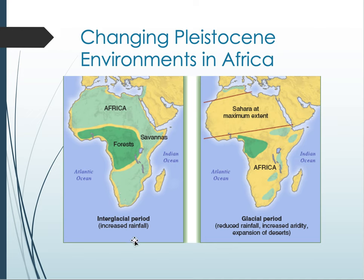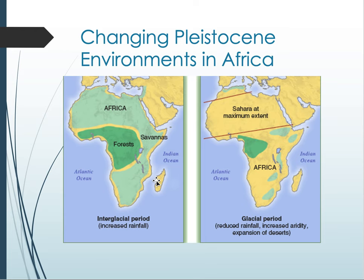The cause of these wet and dry cycles is interglacial and glacial periods occurring during the Pleistocene. During an interglacial period, when there's less ice captured in arctic environments, we have a lush, wet African terrain. But during a glacial period, when more water is locked up in glaciers, we have a dry, desert-like environment. Around 2.5 million years ago, Africa starts to fluctuate dramatically between these two states.